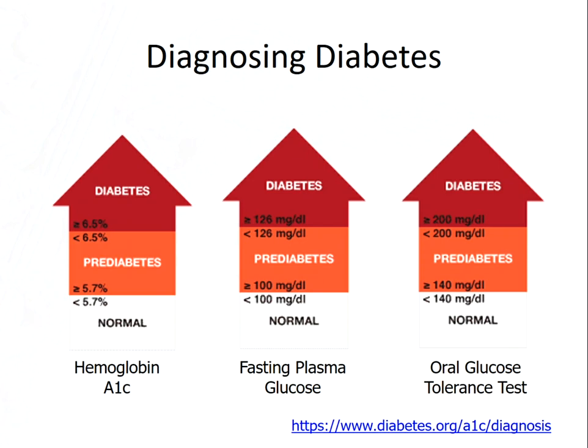Another way to diagnose diabetes is with a fasting plasma glucose level — above 126 milligrams per deciliter would be considered diagnostic for diabetes. And finally, the last test would be an oral glucose tolerance test where someone takes a controlled amount of glucose and we monitor the blood glucose response to that. If that is greater than 200 milligrams per deciliter, that would be considered diagnostic for diabetes.